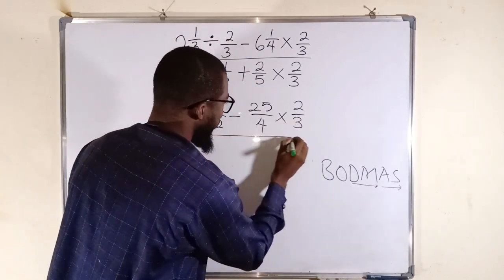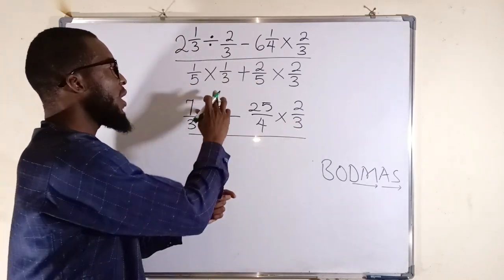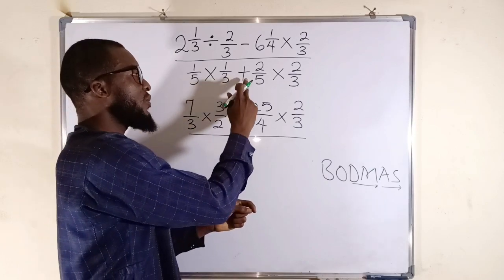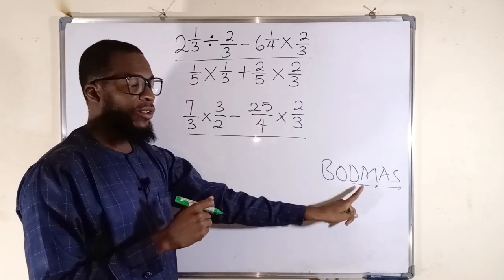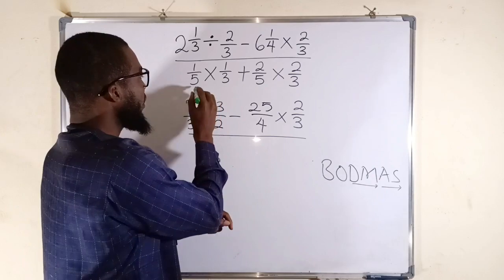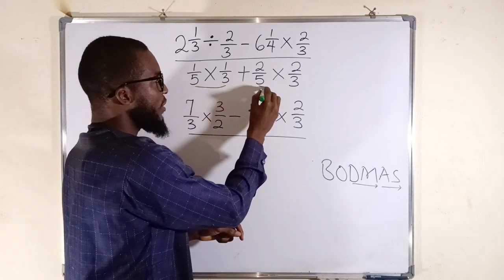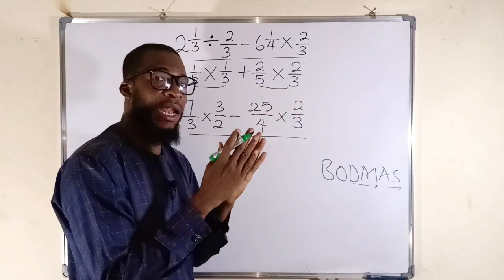Then coming to the denominator, since we have only 2 operations, multiplication and addition, you have to start with multiplication. So let us multiply the 2 terms and the 2 terms separately before we add their results.